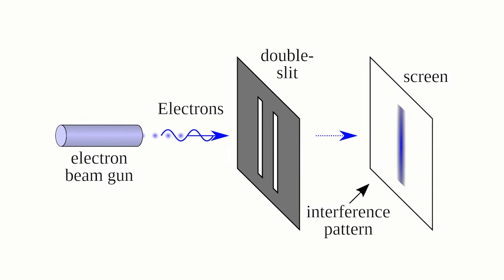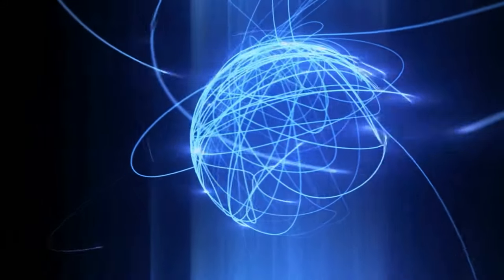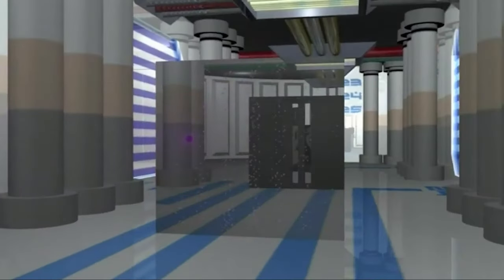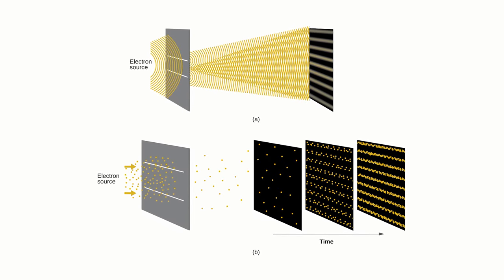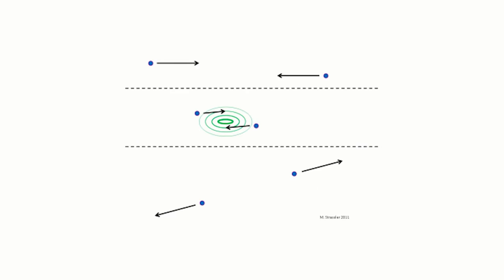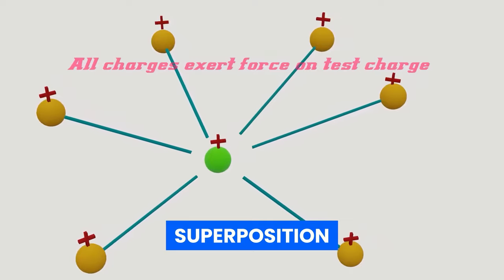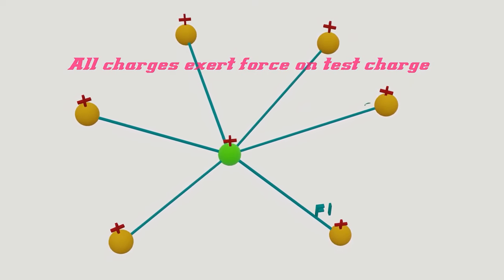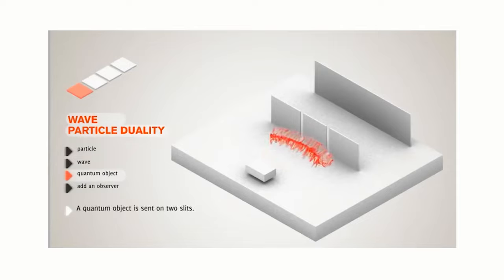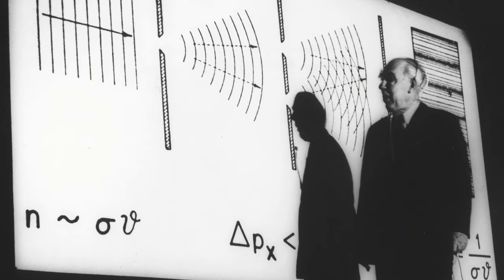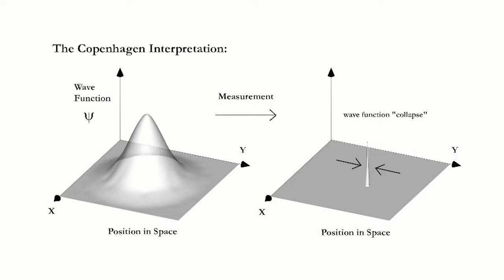The double-slit experiment is a famous experiment in quantum mechanics that demonstrates the wave-particle duality of matter. It involves shooting individual particles, such as electrons or photons, through two slits in a barrier, and observing the resulting interference pattern on a screen behind it. When particles are shot through the slits one at a time, they create an interference pattern characteristic of waves. This is unexpected, since particles are typically considered localized objects rather than waves. One interpretation is that the particles exist in a superposition of states, simultaneously having wave-like and particle-like properties. Another is the Copenhagen interpretation, which suggests that particles only have definite properties once they are measured — measurement collapses the wave-function and forces the particle to assume an actual position.